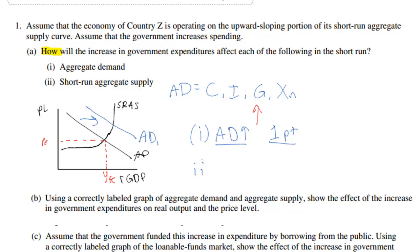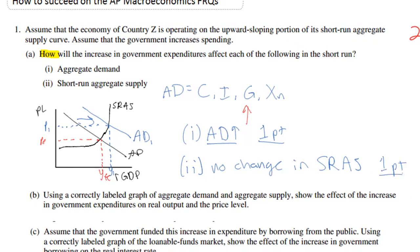For part A(ii), we are asked to indicate how aggregate supply will be affected. As we can see on the graph, an increase in expenditures leads to an increase in aggregate demand, an increase in real GDP, and an increase in the price level. However, one thing that does not change is aggregate supply — there is no shift in the aggregate supply curve. So we can say there is no change in short-run aggregate supply. This will also be a one-point question.